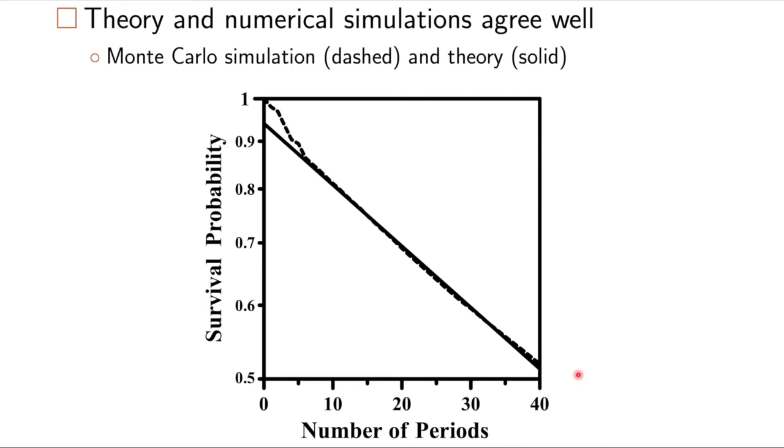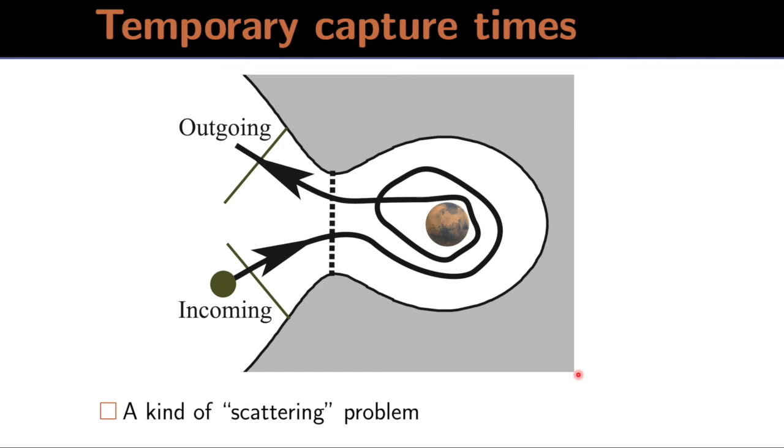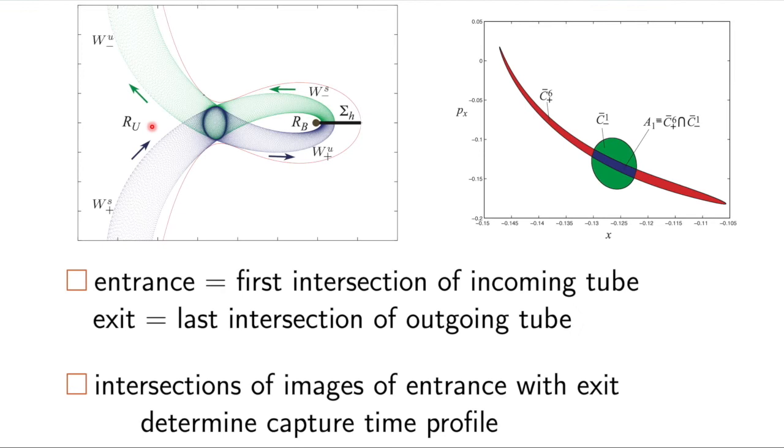We can look at other things, such as temporary capture around a planet. This is a kind of scattering problem, where let's say something comes in, is temporarily captured. We want to know how long is it captured in terms of the number of loops and time before escaping. Again, we use these tubes and look at their intersections. Look at multiple intersections.